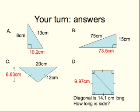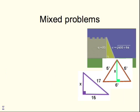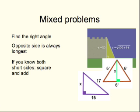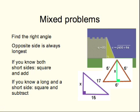Those are the two main ways of using Pythagoras' results to solve problems. You're going to get mixed problems in the exam — you'll be given a situation where you've got to recognise what to do. The procedure is: first, find the right angle, which is opposite the long side and usually marked with a square angle sign. The opposite side is always the longest once you know where the right angle is. If you know both short sides, square and add. If you know a long and a short, square and subtract. Take the square root at the end. That's your standard procedure for dealing with Pythagoras questions.